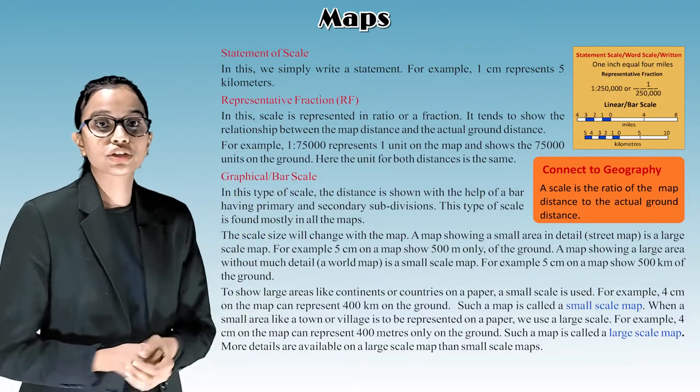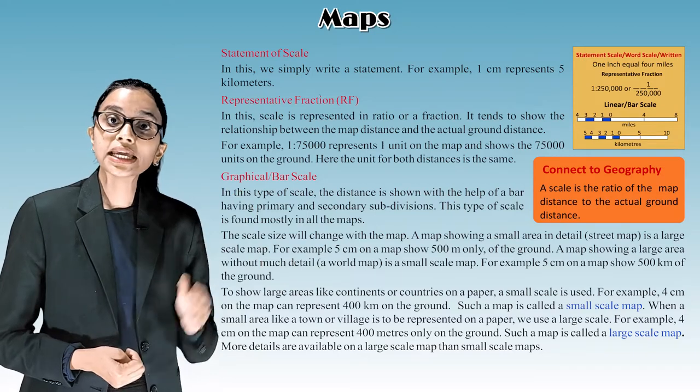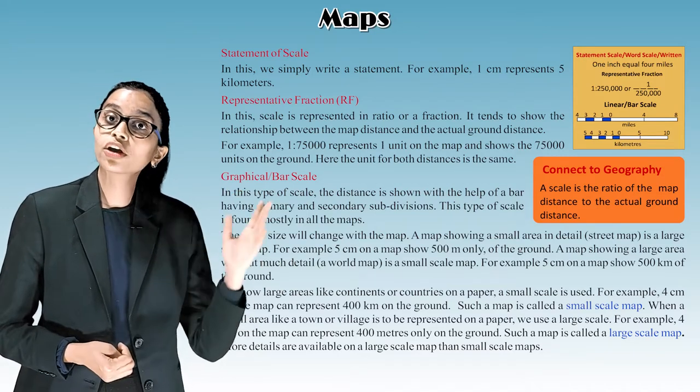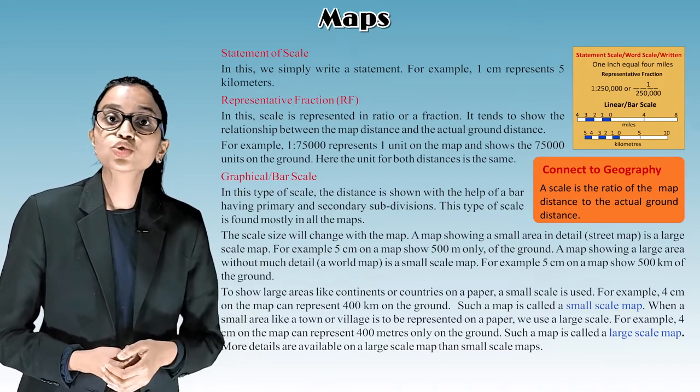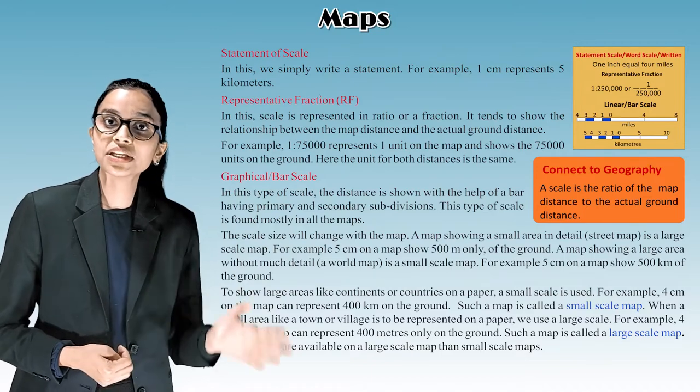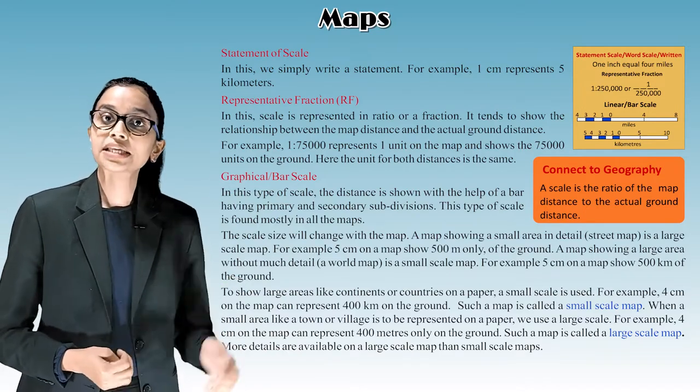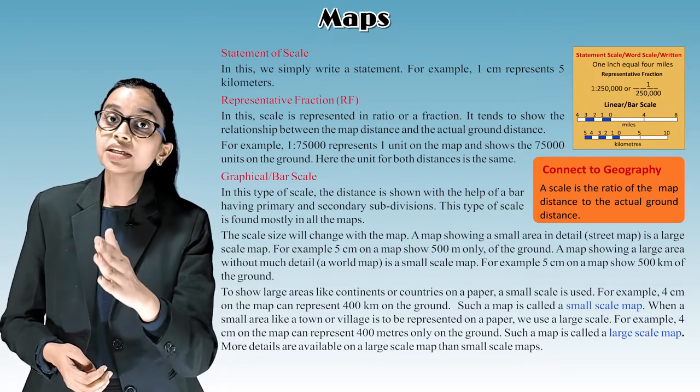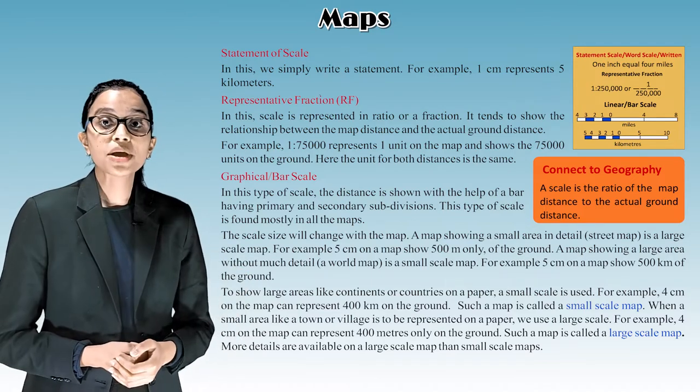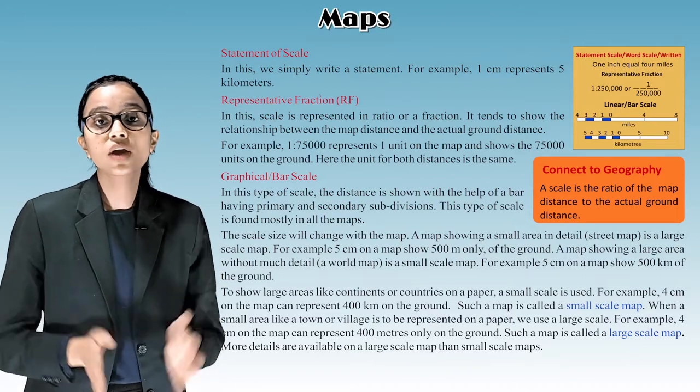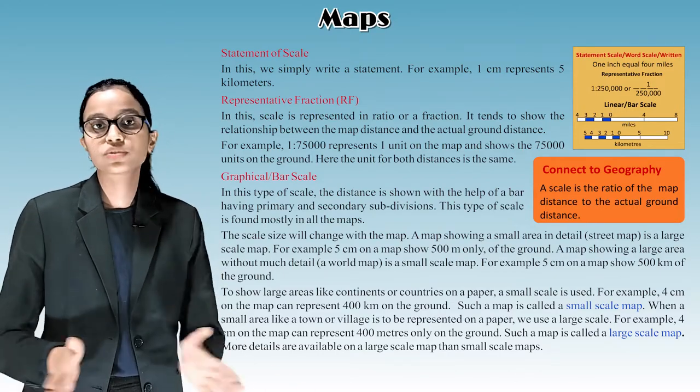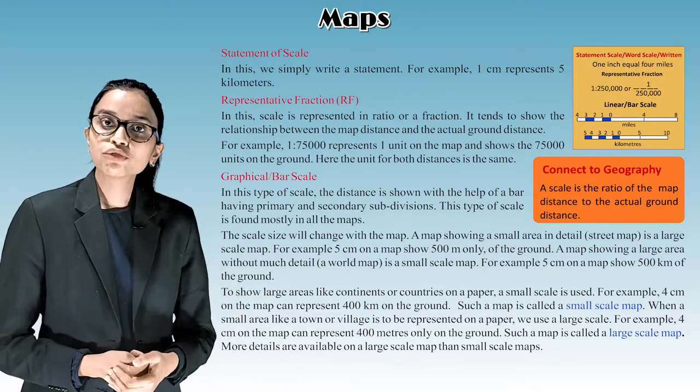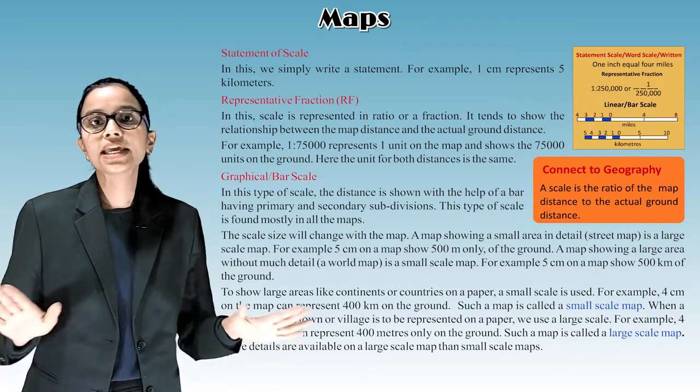Representative Fraction. In this, scale is represented in ratio or a fraction. It tends to show the relationship between the map distance and the actual ground distance. For example, 1 ratio 75,000 represents 1 unit on the map and shows 75,000 units on the ground. Here, the unit for both distances is the same.